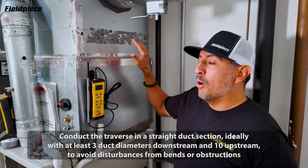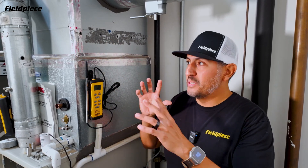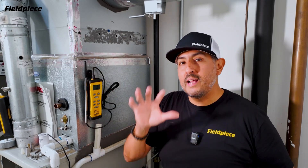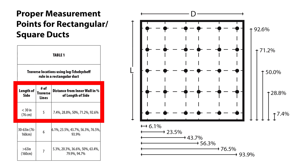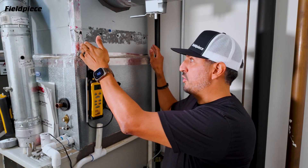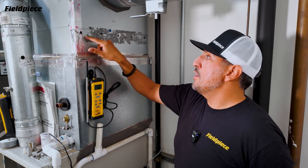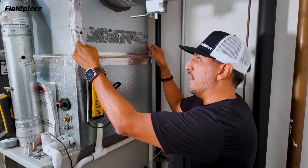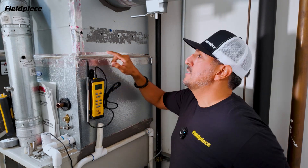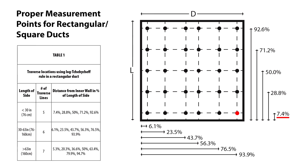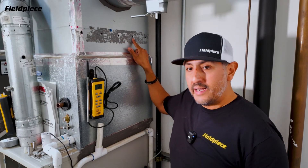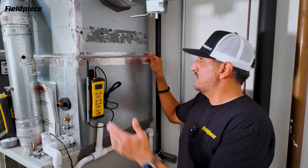Now how many holes you drill into your duct and where you position those holes is important. For a duct that is less than 30 inches, industry says we need five holes. Any duct from 30 to 60 inches, you need six holes. We have a 20 and a quarter inch width duct here so I have five holes. Based on industry tables, your first hole is drilled at 7.4% of the duct width, the next at 28.8%, the third at 50%, the fourth at 71.2%, and the last at 92.6%.